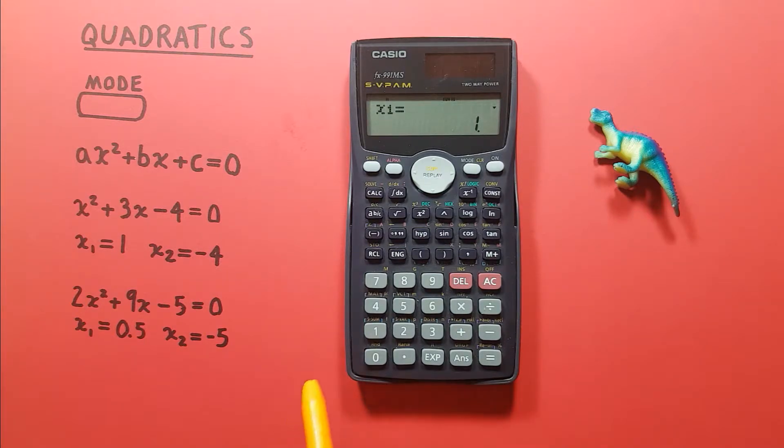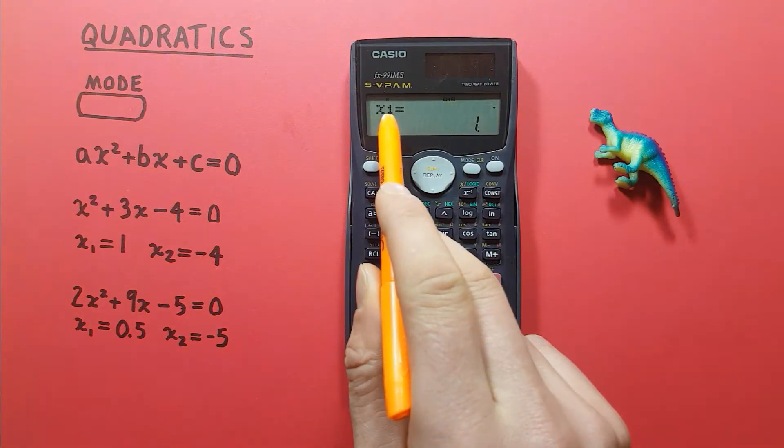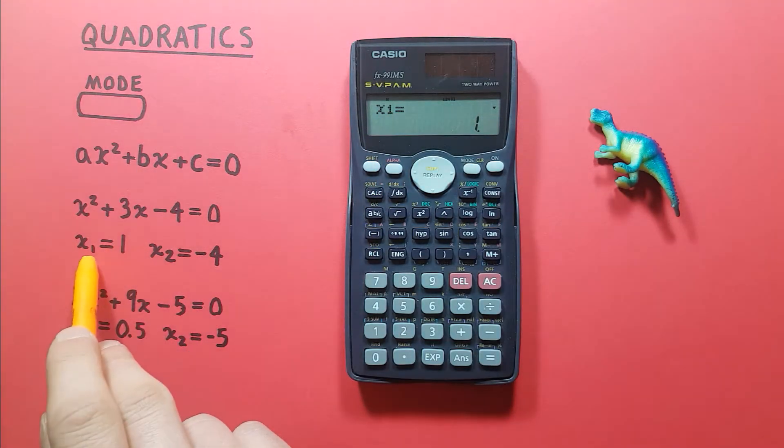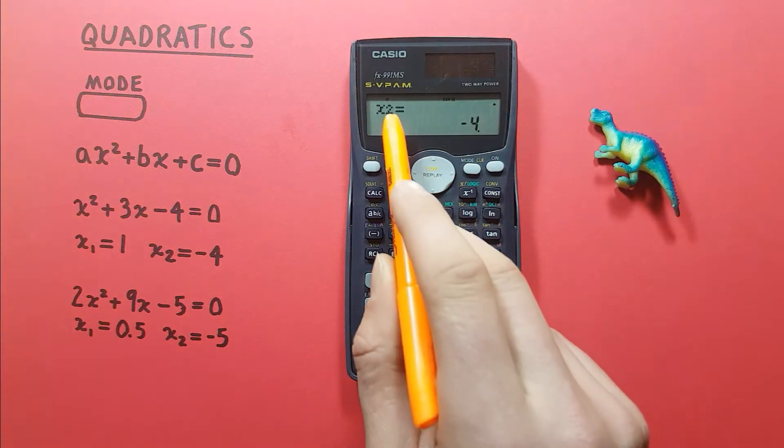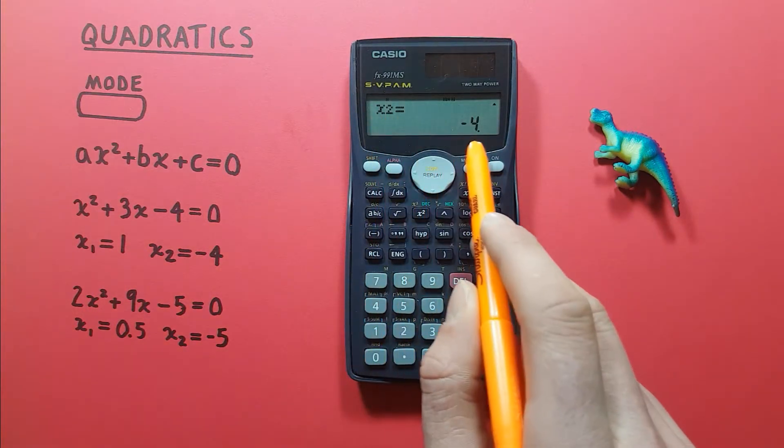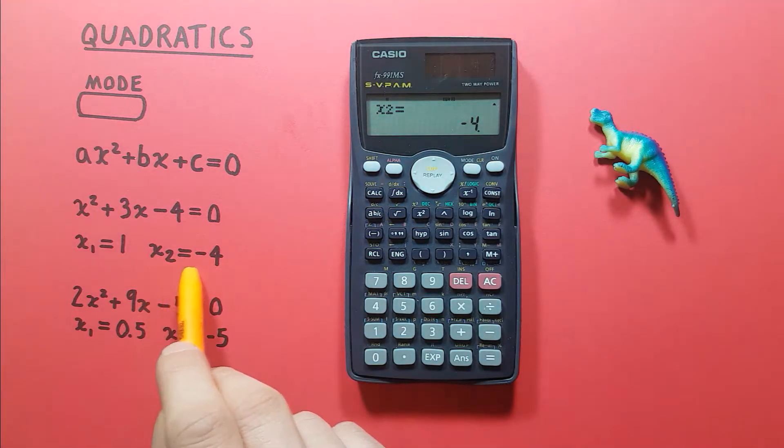We are then immediately given our results. So the first possible solution, X1, is X equals 1. And if we go down one, we get X2 equals negative 4. So that's our next possible solution.